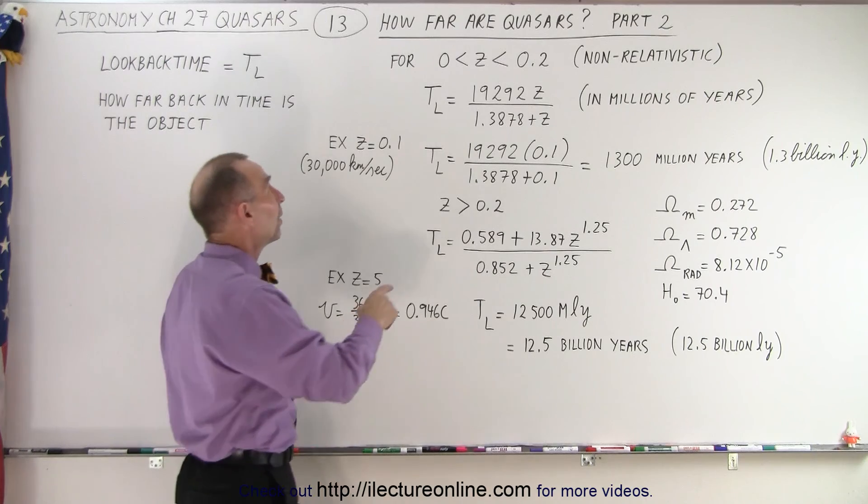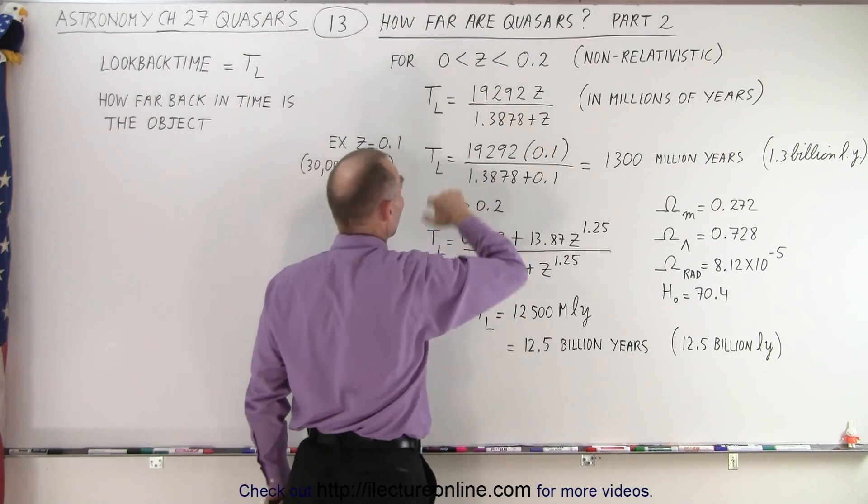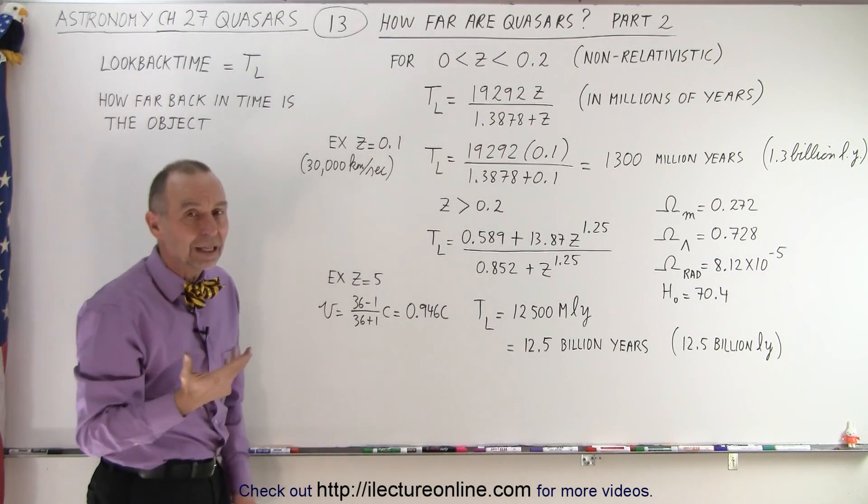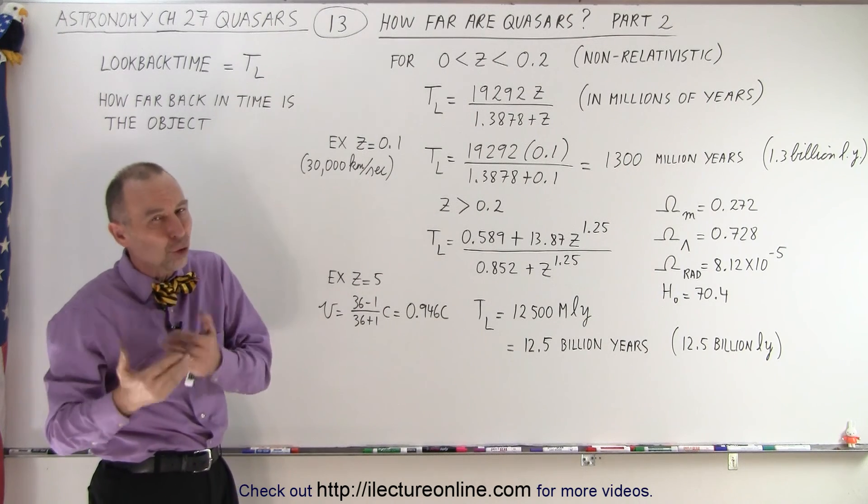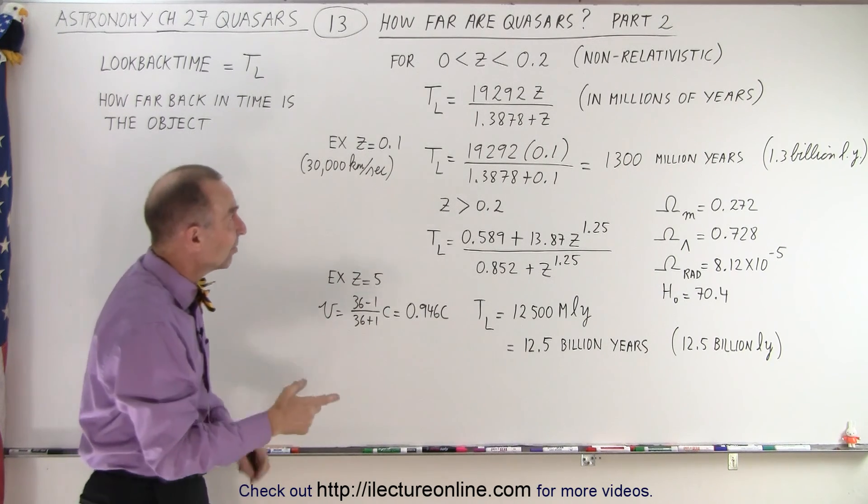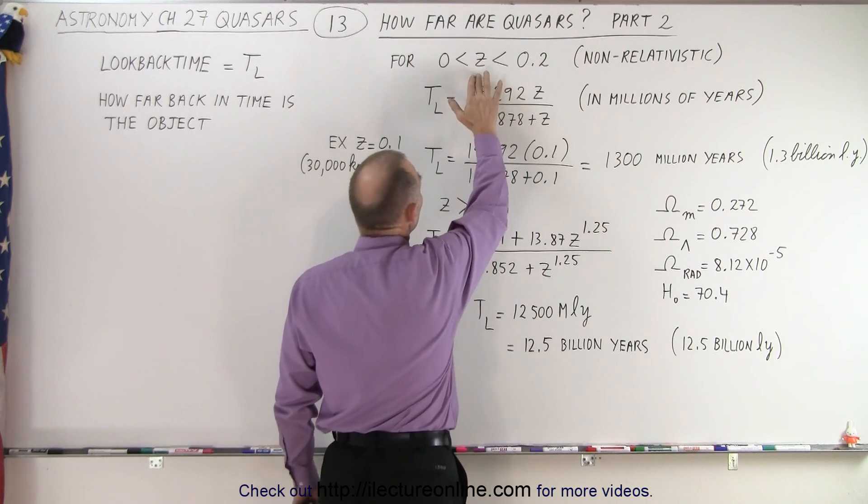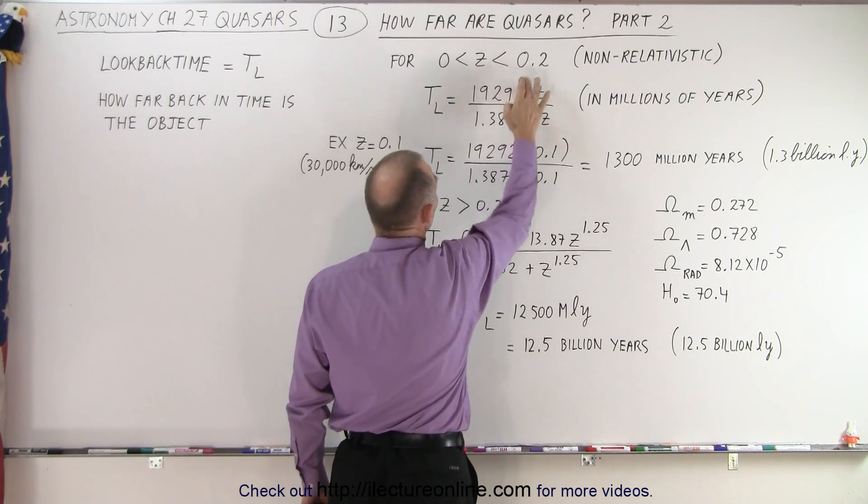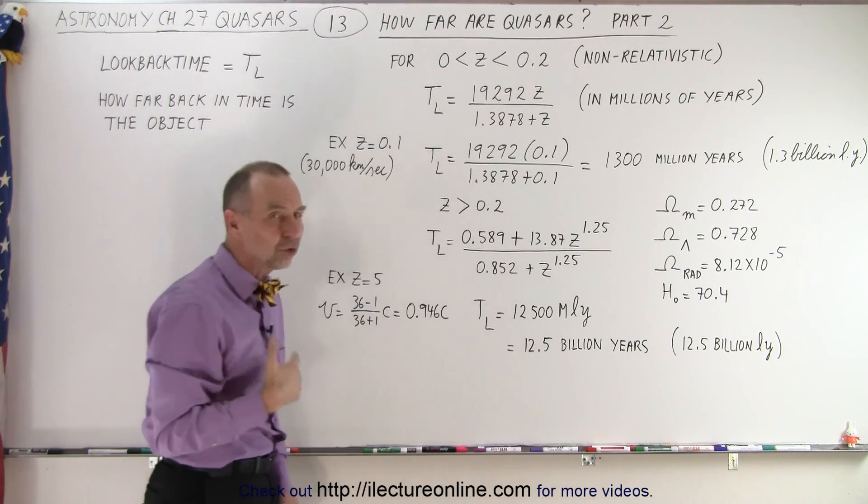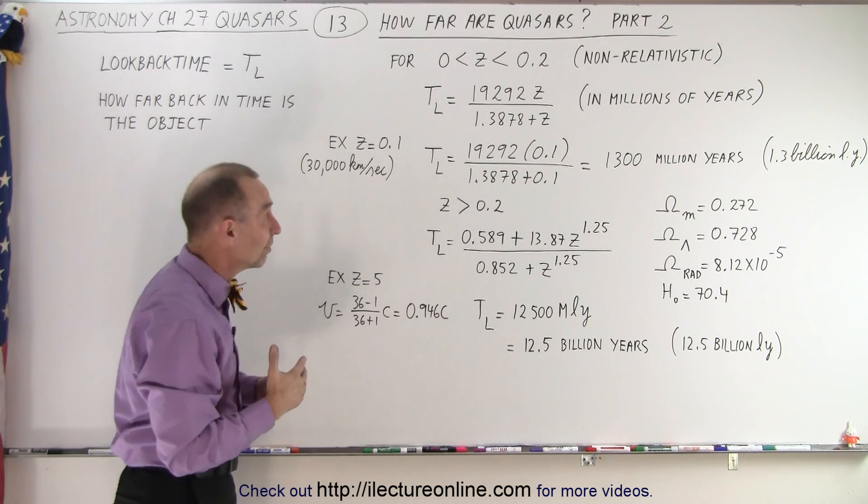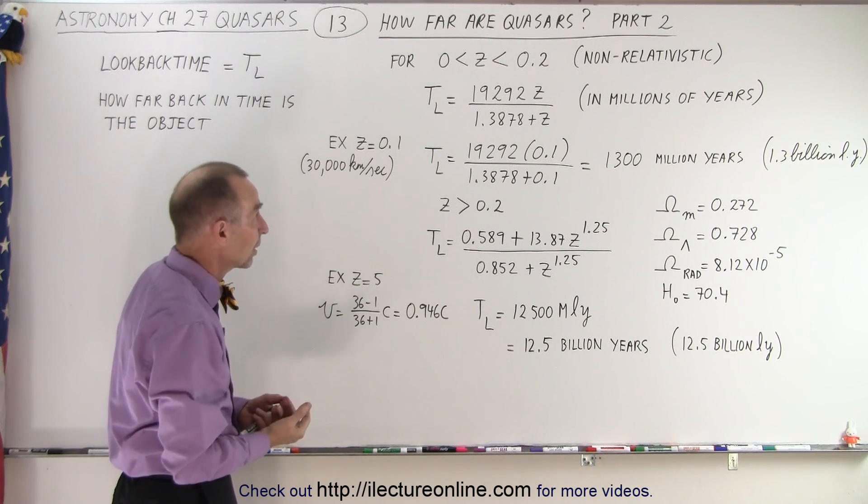We can calculate it when z is non-relativistic, when the velocity of the object is so small relative to the speed of light that it has no relativistic effects. We can say that it's correct for about z being between 0 and 0.2. But once z becomes too large, there's relativity effects, and we have to take those into account.